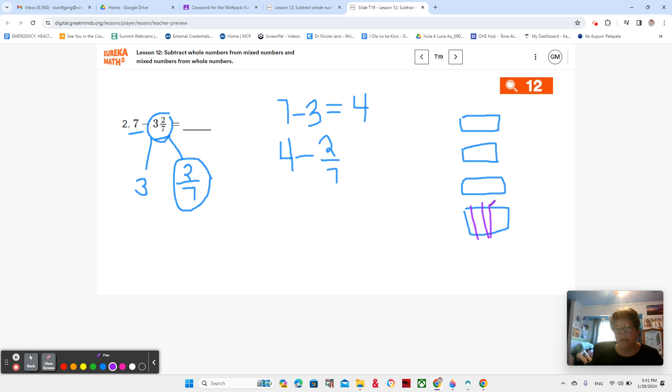And I'm taking away 2 sevenths. So that means I need to break it into 7 parts. 1, 2, 3, 4, 5. 6 lines makes 7 parts. And I'm taking away 2 sevenths. So I'm taking away 1 seventh. I'm taking away 2 sevenths.